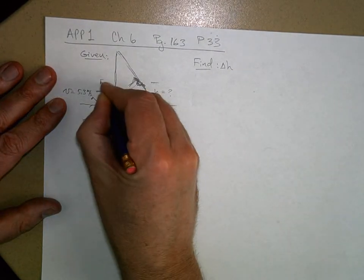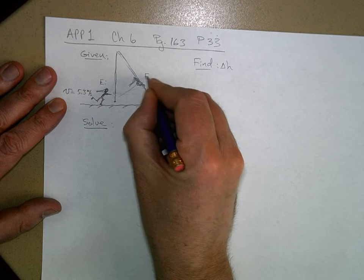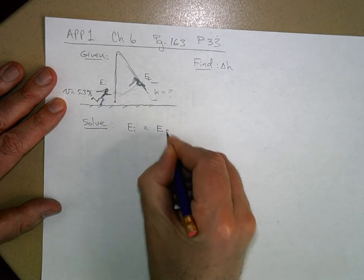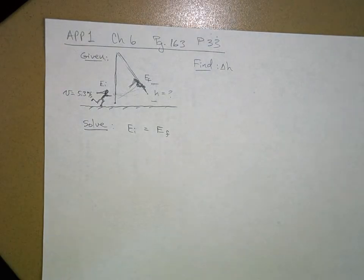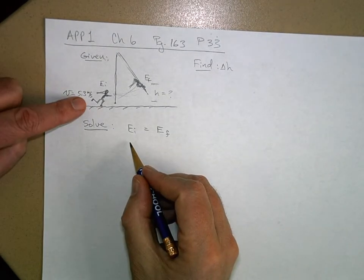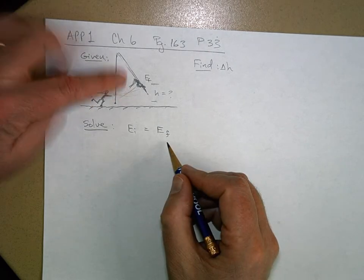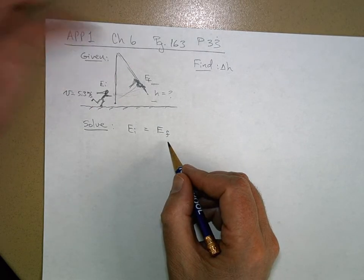So I'm going to say E initial, this is E final. So I'm going to say E initial equals E final. The mechanical energy before she grabs the vine will be equal to the mechanical energy after she grabs the vine.